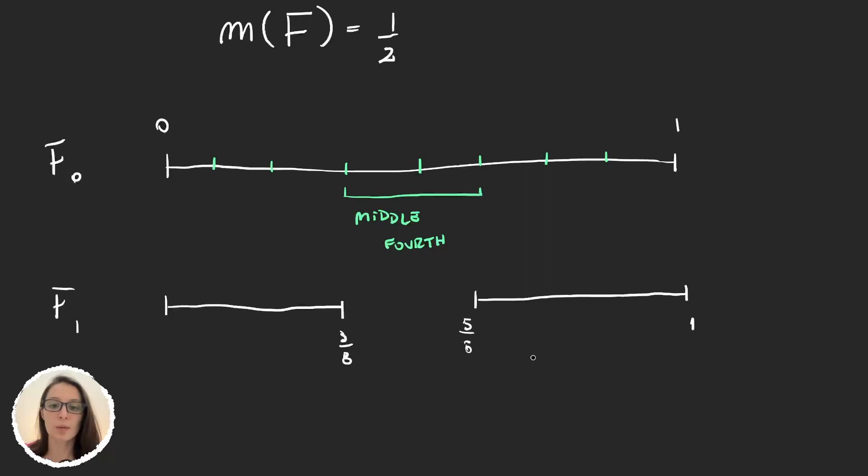And now you could think, okay, I'm going to do the same—divide everything into eight pieces and remove the middle fourth. But no, because that would actually lead us to a set with measure zero. The idea now will be to remove less and less on each iteration, so that the final measure is not zero but some positive number. And hopefully, in this video, it will be 1/2.